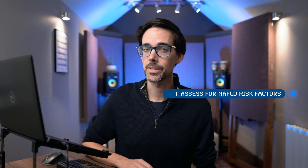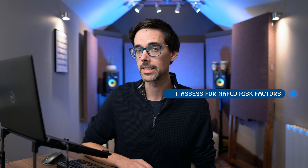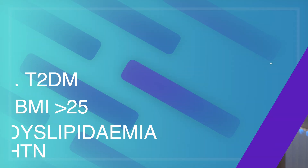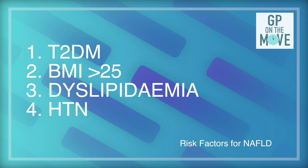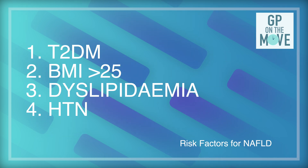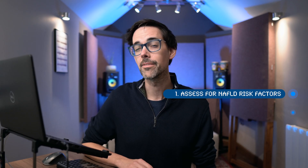Let me explain the pathway that I use. If I get an abnormal ALT, I will ask the patient to come in and assess for risk factors for NAFLD, which is non-alcoholic fatty liver disease. Those are: number one, type 2 diabetes; number two, BMI more than 25; number three, dyslipidemia; and number four, hypertension.